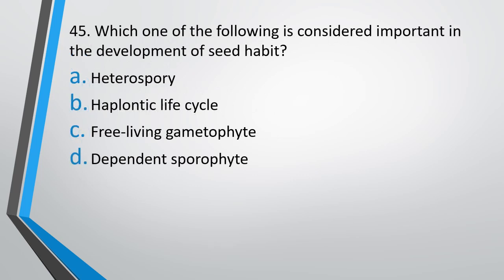Question number 45. Which one of the following is considered important in development of seed habit? Heterospory, haplontic life cycle, free-living gametophyte, or dependent sporophyte. Correct answer is option A — heterospory.